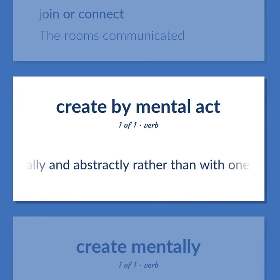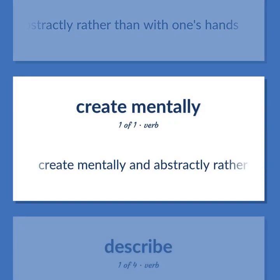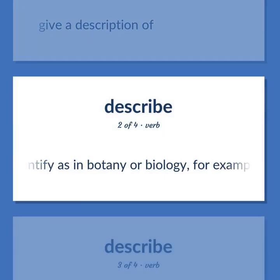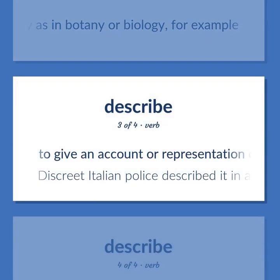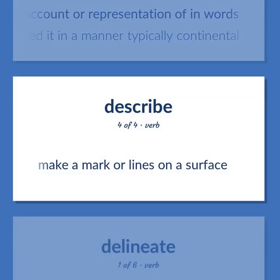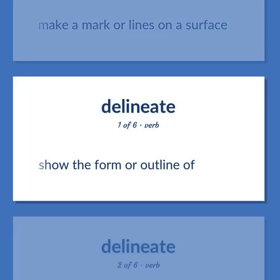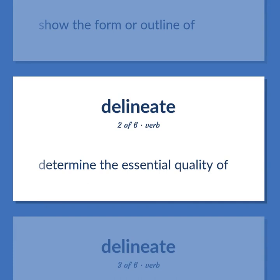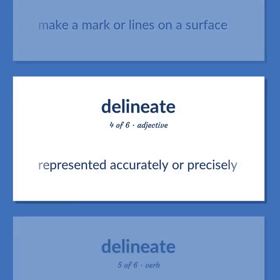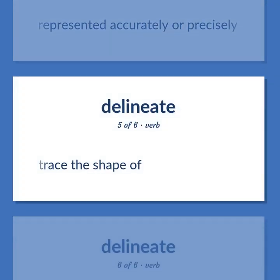Create mentally and abstractly rather than with one's hands. Describe: Give a description of. Identify, as in botany or biology, for example. To give an account or representation of in words. Discrete Italian police described it in a manner typically continental. Make a mark or lines on a surface. Show the form or outline of. Determine the essential quality of. Represent accurately or precisely. Trace the shape of. Describe in vivid detail.